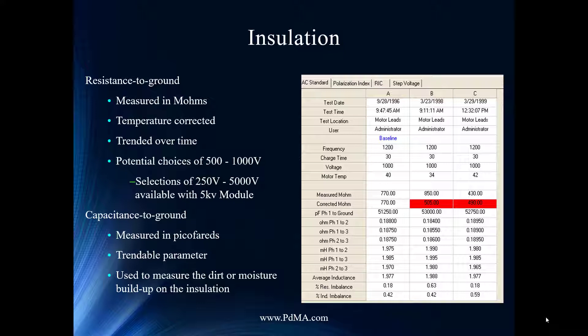The main variable affecting insulation resistance is temperature. Insulation has a negative temperature coefficient — raise the temperature and resistance drops; lower the temperature and resistance goes up. That variability makes trending very difficult. Temperature correction gives you a number that's more trendable, so whether you test in winter or summer, by recording the actual temperature you get a comparable, trendable value.